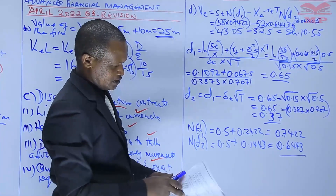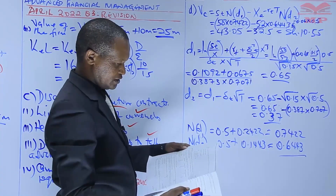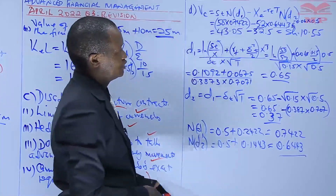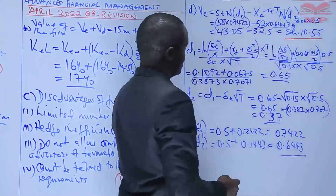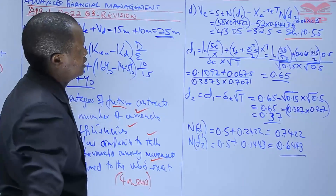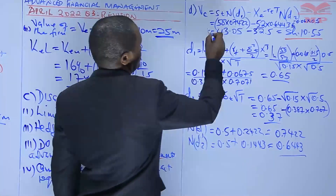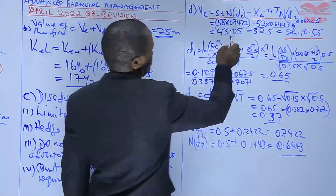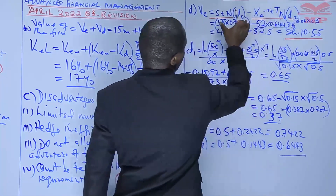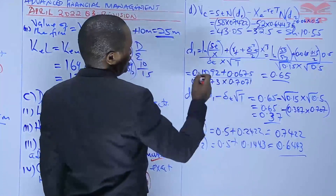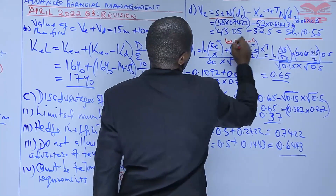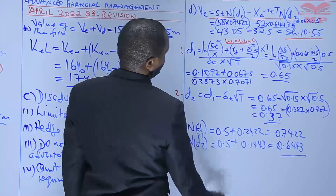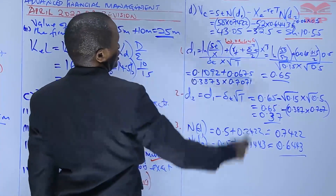The question asks: using Black's call option pricing model, estimate the value of the call option. So the value of the call option is 10 shillings and 55 cents. The first thing to do is to put down the formula. The examiner may provide the formula. Within the formula, these inputs must be calculated as workings — working one, two, three, four — covering the variables needed for the calculation.